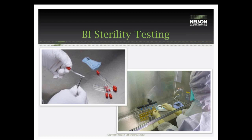Again, here we're looking for no-growth results. We want the BIs to die in the half cycle to help demonstrate that 12-log reduction requirement.